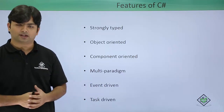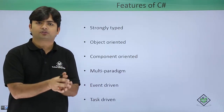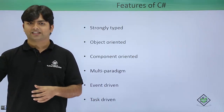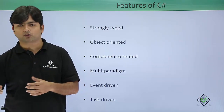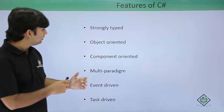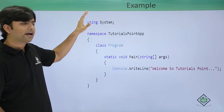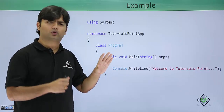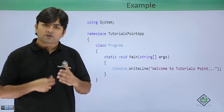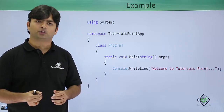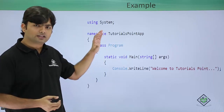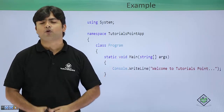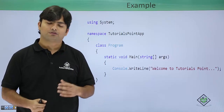C# is also task-driven, which involves asynchronous programming — if a particular task is of higher priority, it will be executed before other things. Here you can see a sample program showing what C# code looks like. If you don't understand it, that's fine. In our next video, we will first install Visual Studio to get started with C# .NET, and then we will see how to write basic programs. That's all for this video.